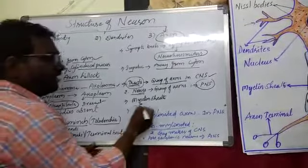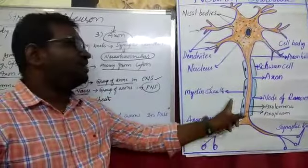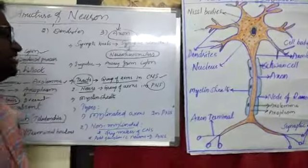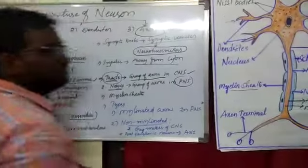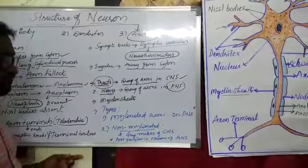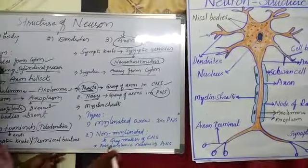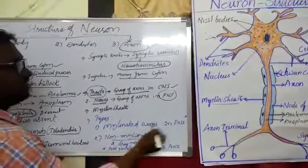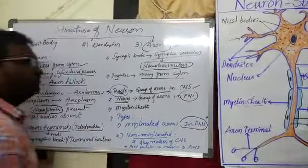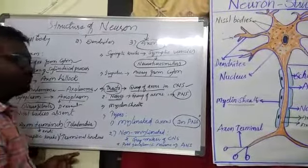Some neurons have a sheet that is called as myelin sheath. Those types of neurons are called as myelinated neurons. If the axons are not having myelin sheath, those types of neurons are called as non-myelinated neurons. Myelinated axons are present in the Peripheral Nervous System, and non-myelinated axons are present in the grey matter of the CNS.